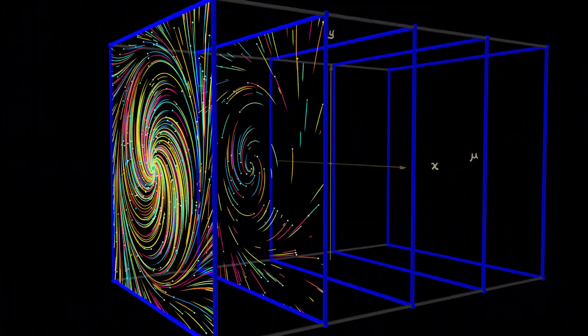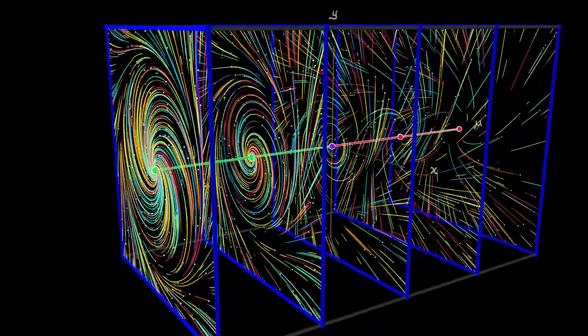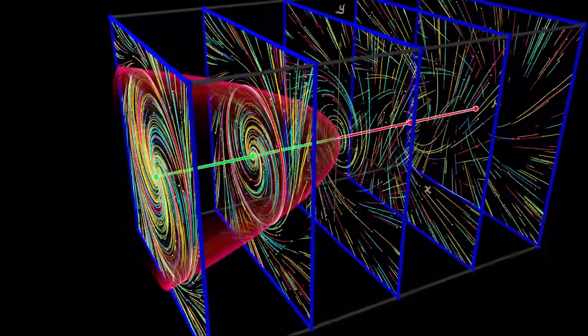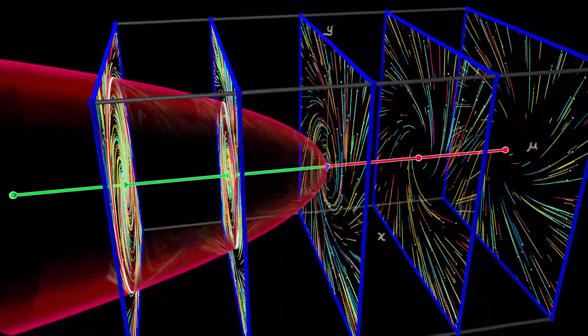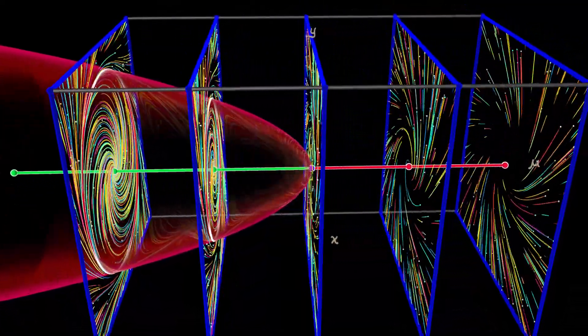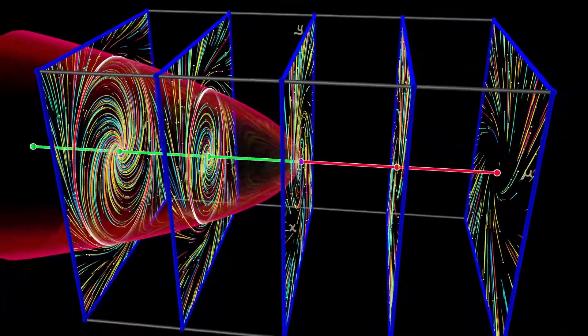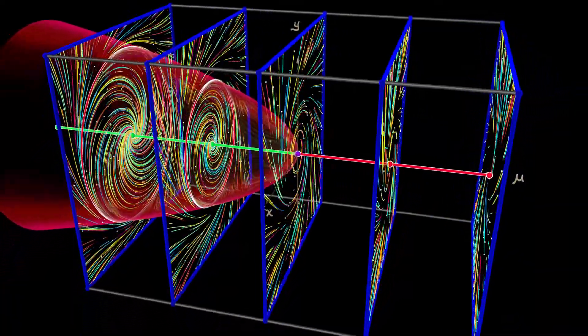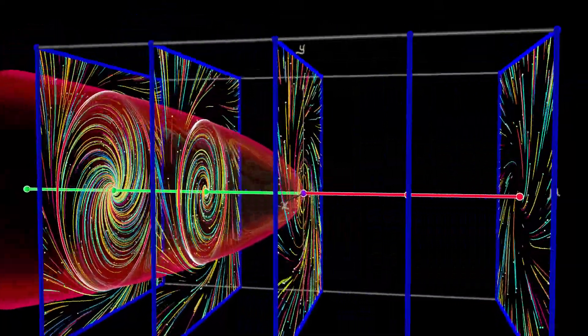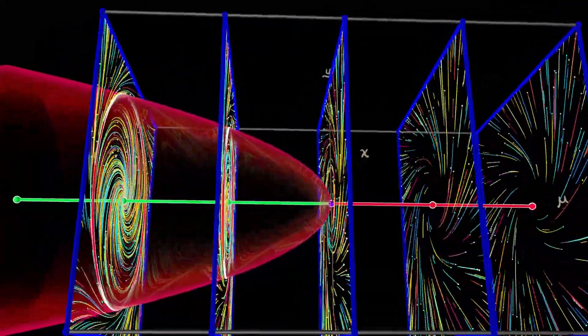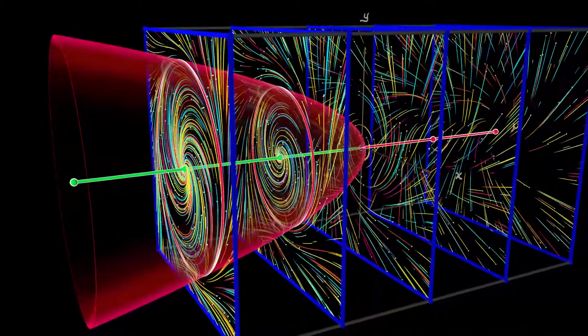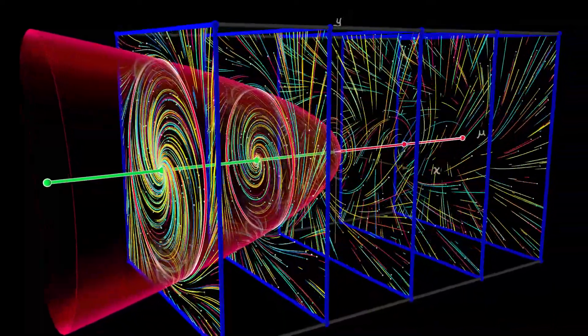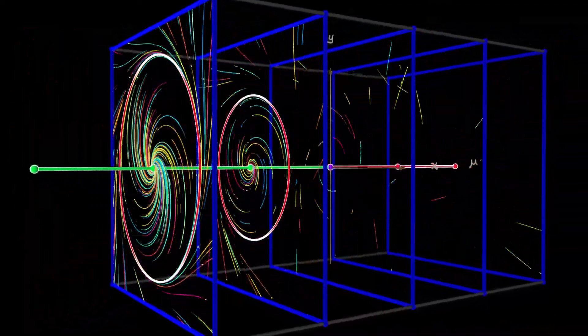Likewise, in the subcritical Hopf bifurcation, if you look at that in the full three-dimensional space, now your limit cycles are unstable. And they form an unstable paraboloid in that full three-dimensional space that encases the line of stable equilibria. Being able to see what is happening in that full three-dimensional space is really helpful for distinguishing between the supercritical and the subcritical Hopf bifurcations.